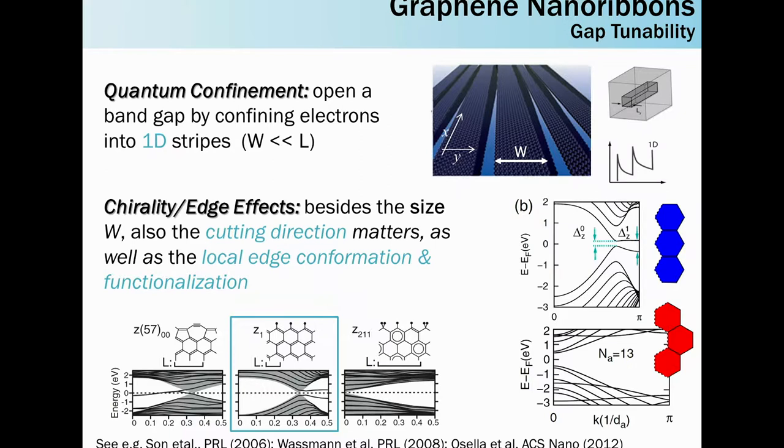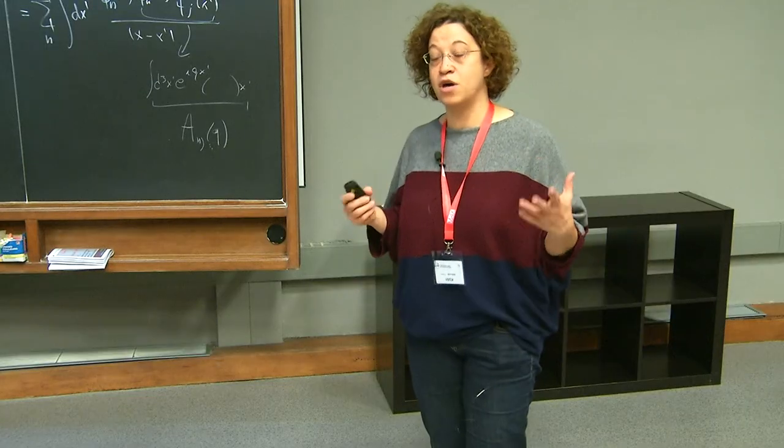In particular, besides changing the width of the ribbon, you can also play with other properties. You can change the cutting direction, the so-called chirality - zigzag versus armchair ribbons have very different properties. But also changing the very local conformation of the edges or adding some functional groups to the edge might lead to very different properties. Here is a simple example from the group of Francesco Mauri showing that if you just passivate your system in a different way, you can get very different band structures.